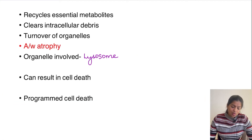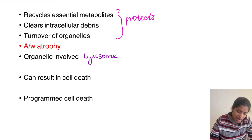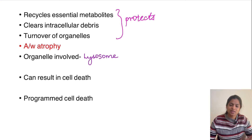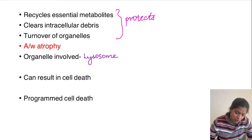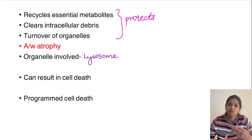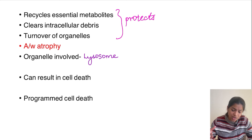This is one of the protective mechanisms to recycle the essential metabolites of the cell and to clear the intracellular debris. Whenever debris accumulates inside the cell, the cell will undergo aging and cell death. So to prevent that and also for the turnover of organelles like the endoplasmic reticulum and mitochondria, the cell has to undergo autophagy. It is a normal and protective mechanism.